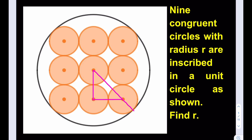Now, since the radius of each small circle is R, let's go ahead and label them. This is R, this is R, this is R, this is R, this is R.